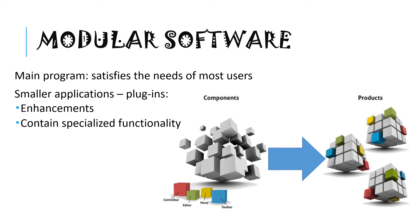Modular software is where we have a main program that satisfies the needs of most users, and then we have smaller applications called plugins, and they bring in enhancements or special kind of functionality. Functionality means adding extra functions, extra little abilities that your program has. And so when we combine the main program and we choose the different enhancements or plugins, we can get a program that does exactly what we want.